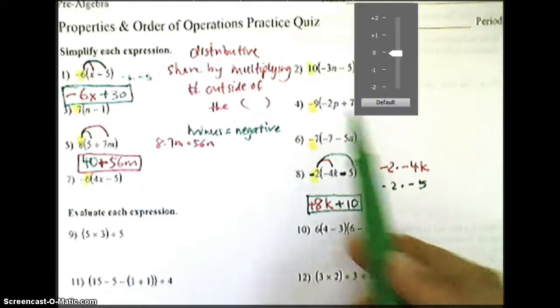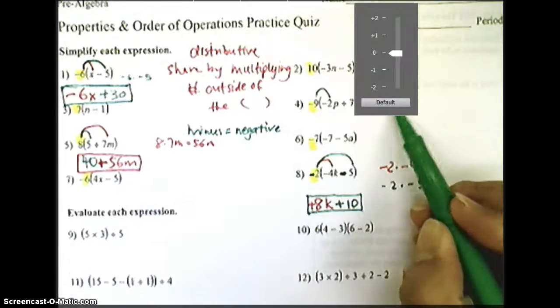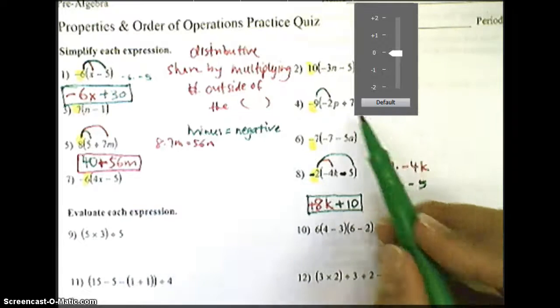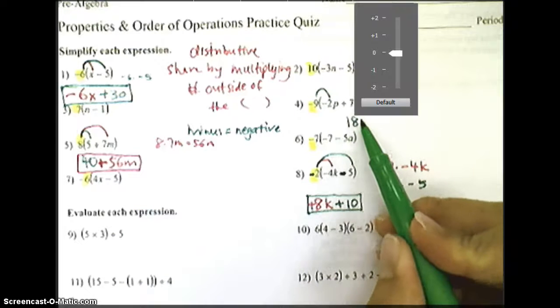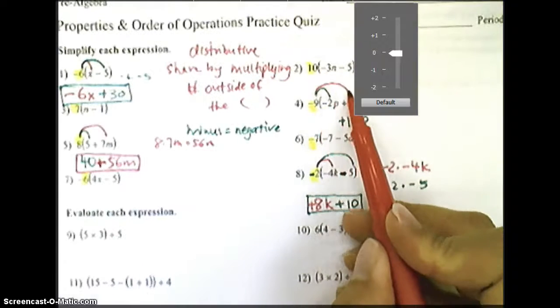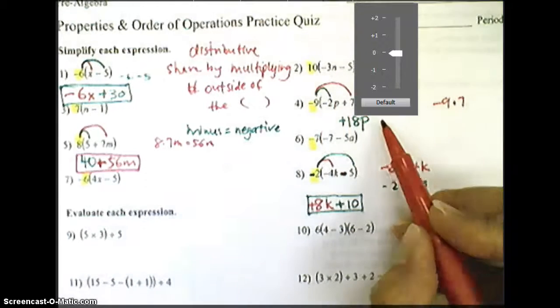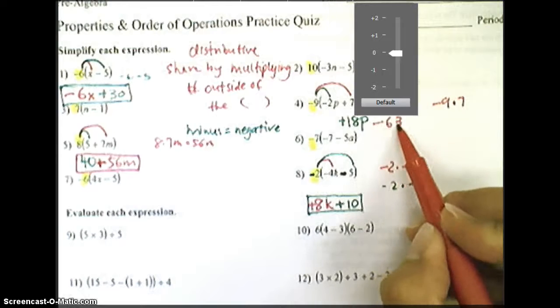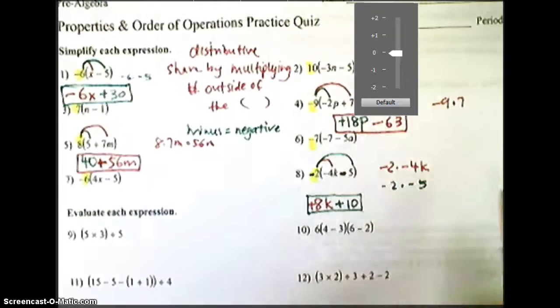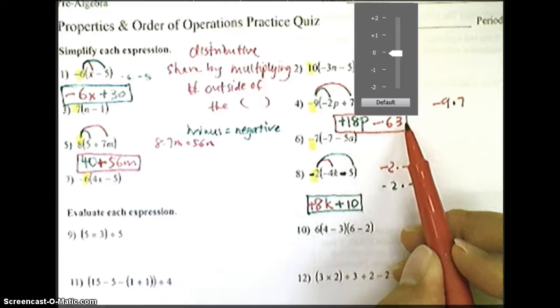Let's try number 9 together. Number 9, I'm going to do the first arrow, negative 9 times negative 2p. Again, you can do that mentally in your head. Negative times negative is positive. So we have positive 18p. Then we have negative 9, and in the back we have positive 7. So a negative 9 times a 7 would simply give us a negative 63. And that negative is going to act as a subtraction sign. And then we're done because 18p cannot subtract with 63 since 63 does not have a p.